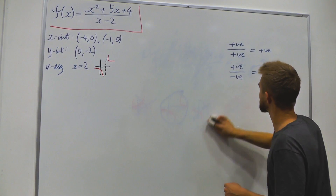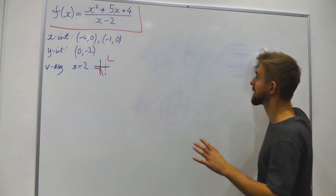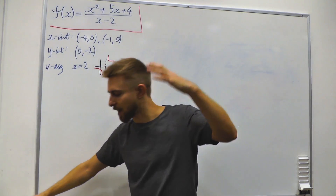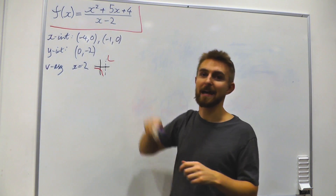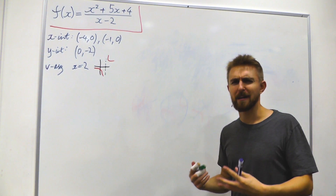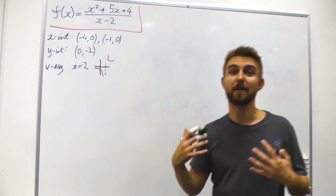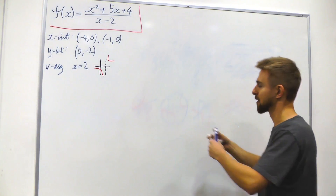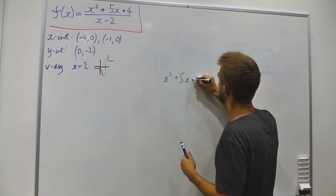The next piece of information: are there any slant asymptotes? A slant asymptote occurs when you have a rational expression where the numerator is one degree higher than the denominator. Here we have x squared on top but only x on the bottom, so yes, we'd expect a slant asymptote. To find its equation we use algebraic long division on x squared + 5x + 4 divided by x − 2.